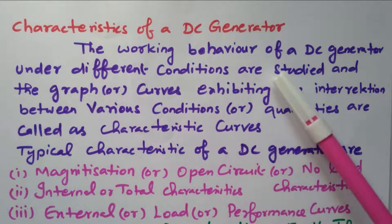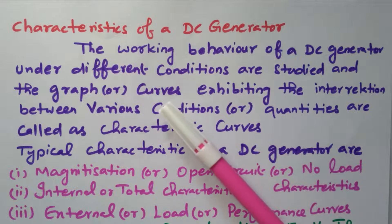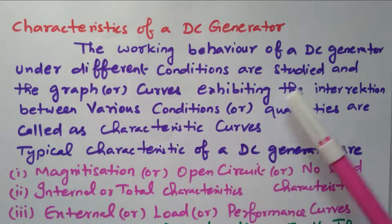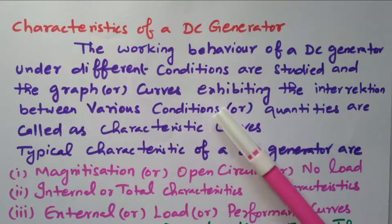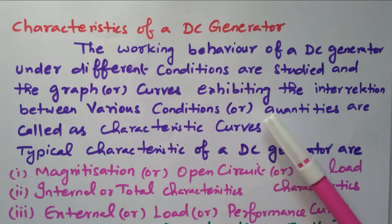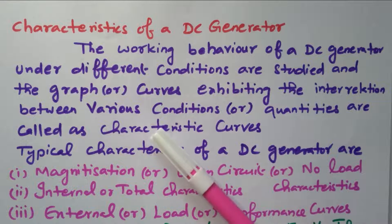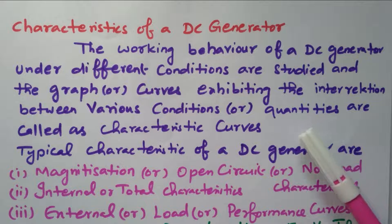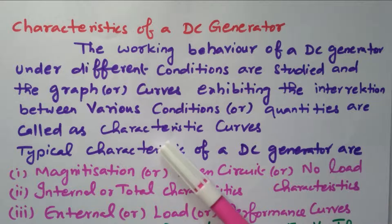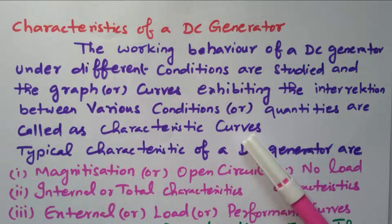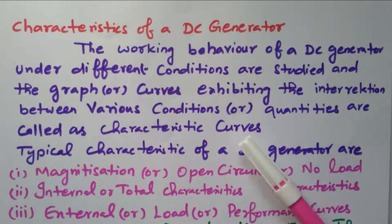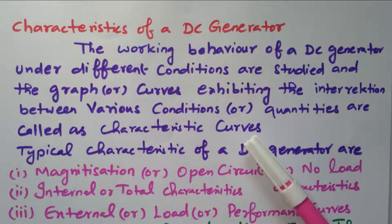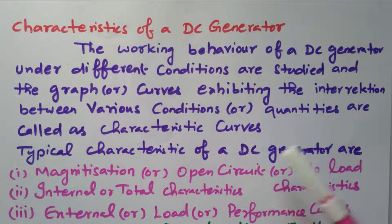The working behavior of a DC generator under different conditions is studied and the graph or curve exhibited between the various conditions or quantities are called the characteristics curve. For different conditions, different parameters are considered, and based on that the graph or curve is drawn — that is nothing but the characteristics of a DC generator.